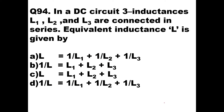Then we will go to the next question. In a DC circuit, three inductances L1, L2 and L3 are connected in series. The equivalent inductance L is given by what? Whenever inductors are connected in series, they follow the law of series resistance. So equivalent inductance should be equal to L1 + L2 + L3. So here option C — L = L1 + L2 + L3 — will be the right answer.